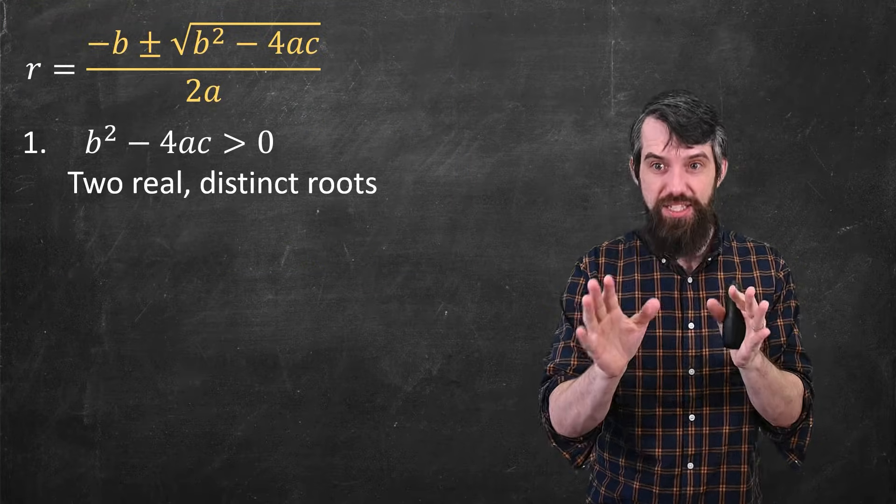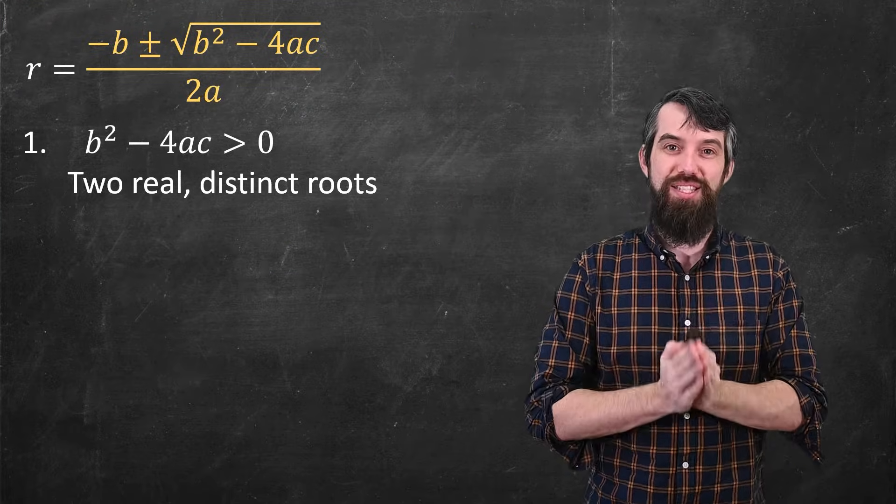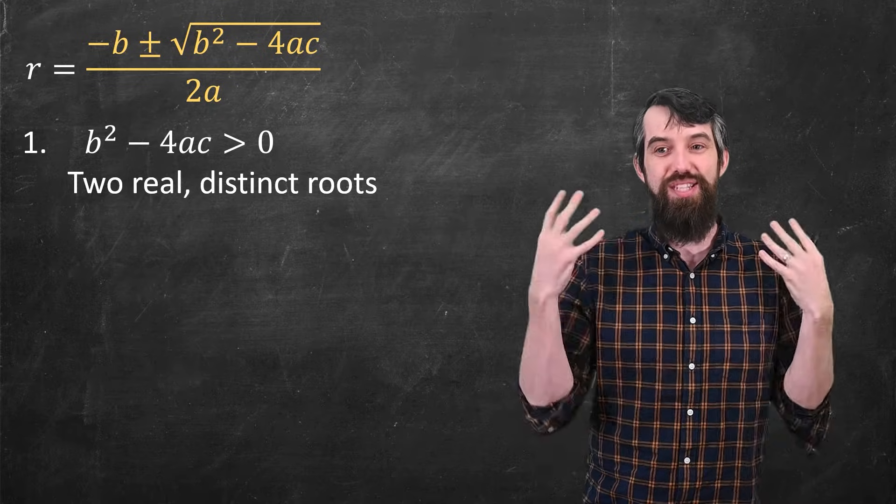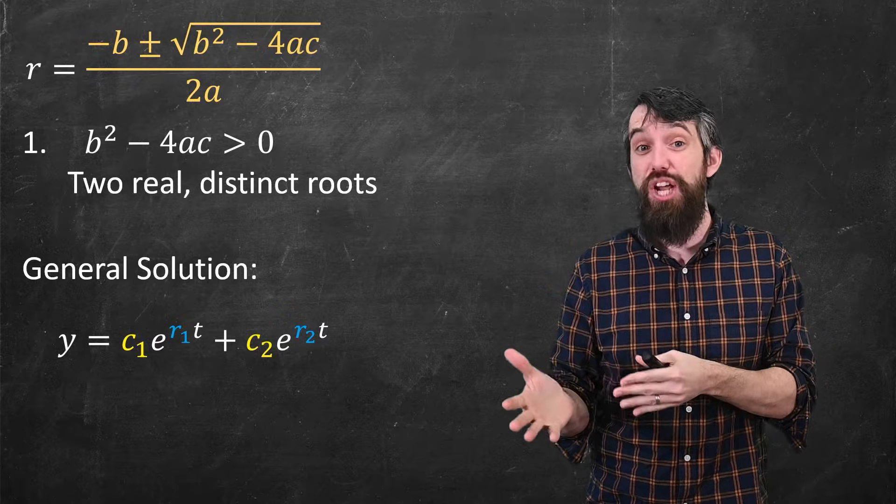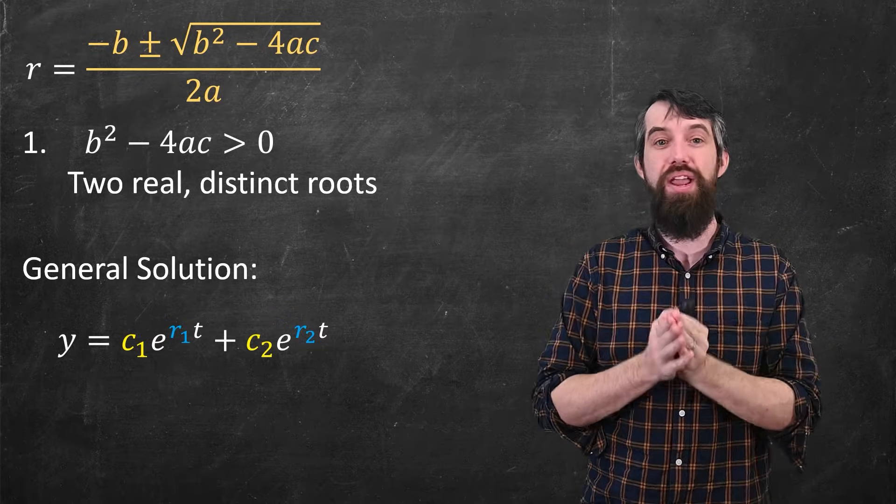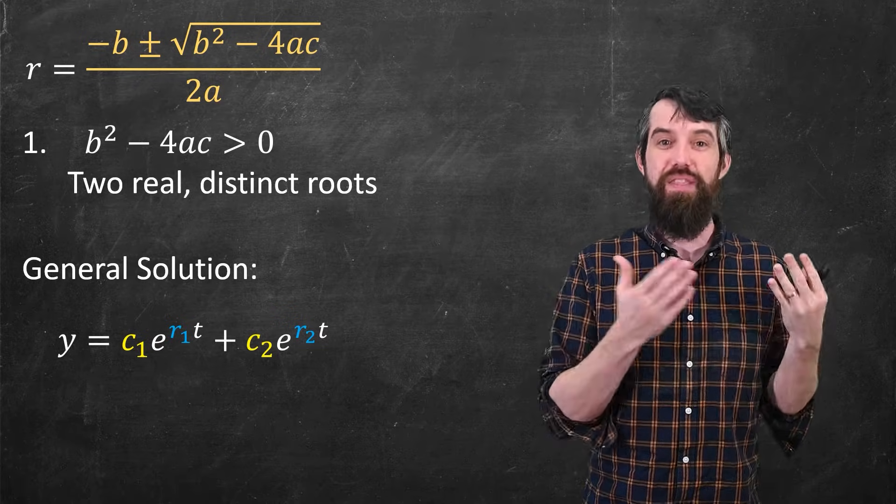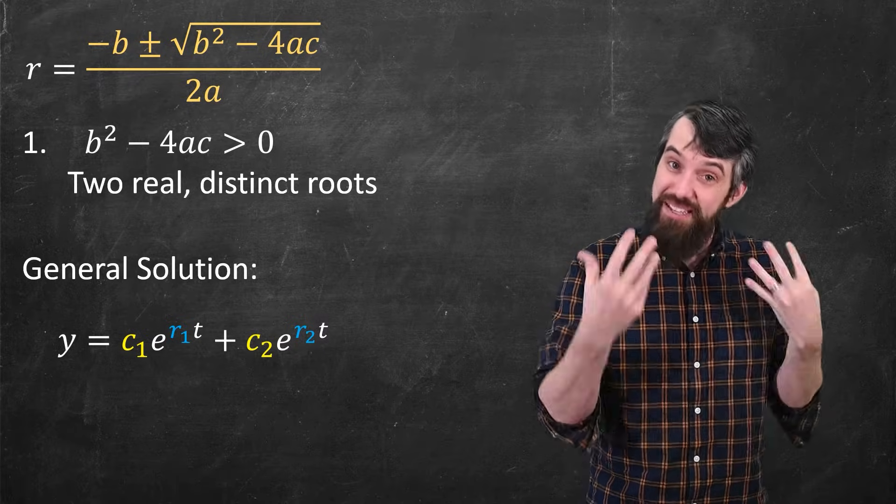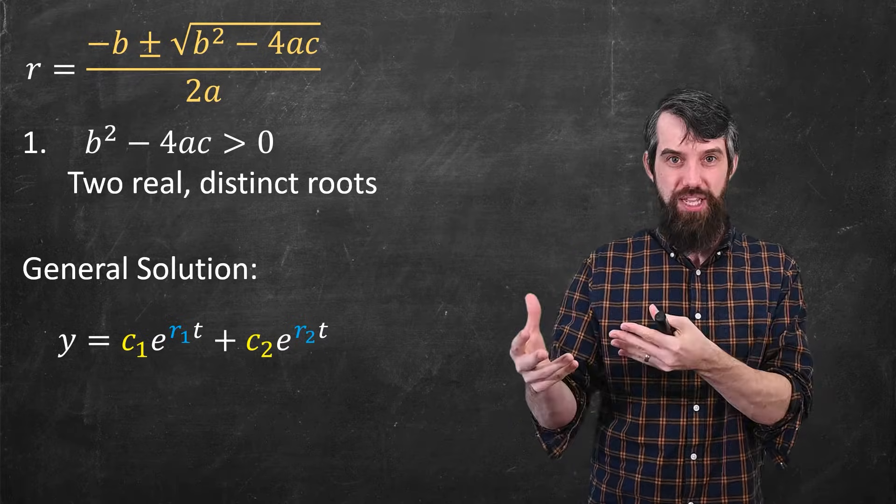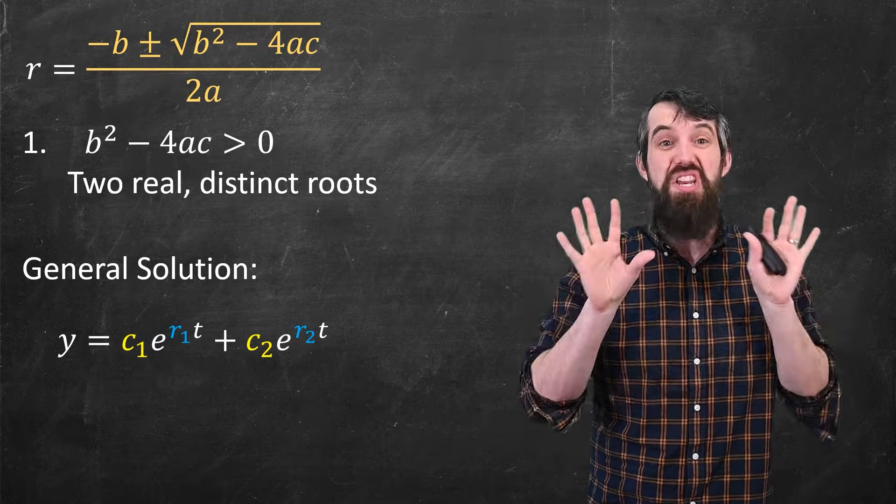So the three cases. First case was b squared minus 4ac greater than zero, and you got two distinct roots, like an r1 and an r2. Then the general solution is exactly like what we saw in our first example, the previous video. It's just e to the r1t with a constant, and a different constant e to the r2t. If they're real and distinct, it's easy, nothing to do.